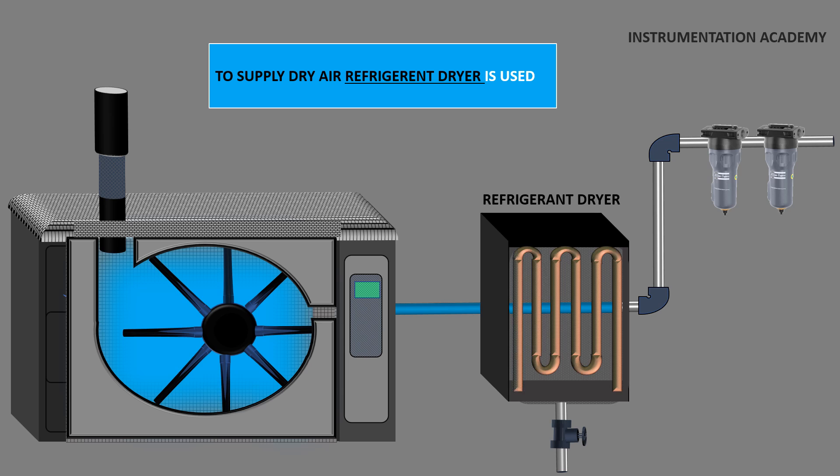The warm moist compressed air enters the dryer which cools it rapidly and the water vapor in the air condenses into pure water which is collected in a water trap. The dry air in the chamber is reheated to room temperature and fed through an outlet.